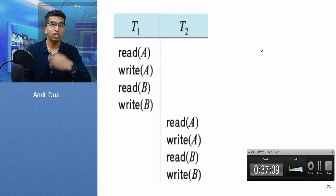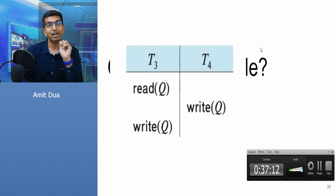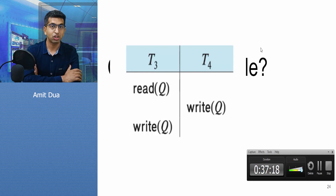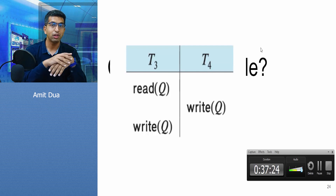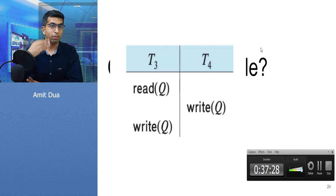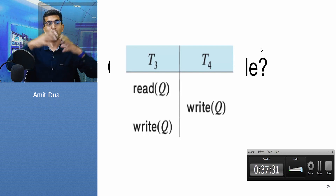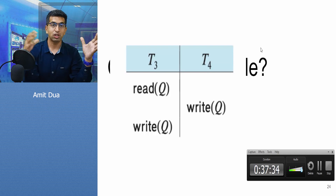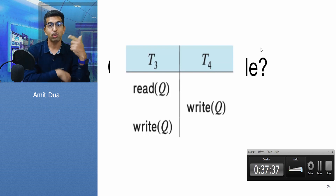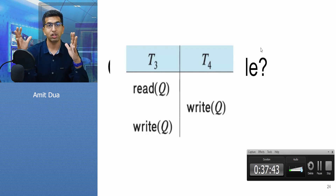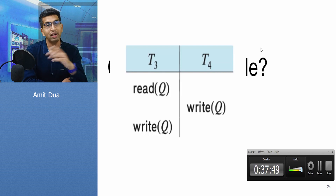There is another property: view serializability. View serializability applies when there is a blind write — a write that happens in a transaction that has not read that particular data item. Because of blind writes, some schedules that give the same result may not be swappable and may appear to have conflicts. All schedules that are conflict serializable are also view serializable. Schedules that are not conflict serializable but have a blind write should be checked for view serializability.